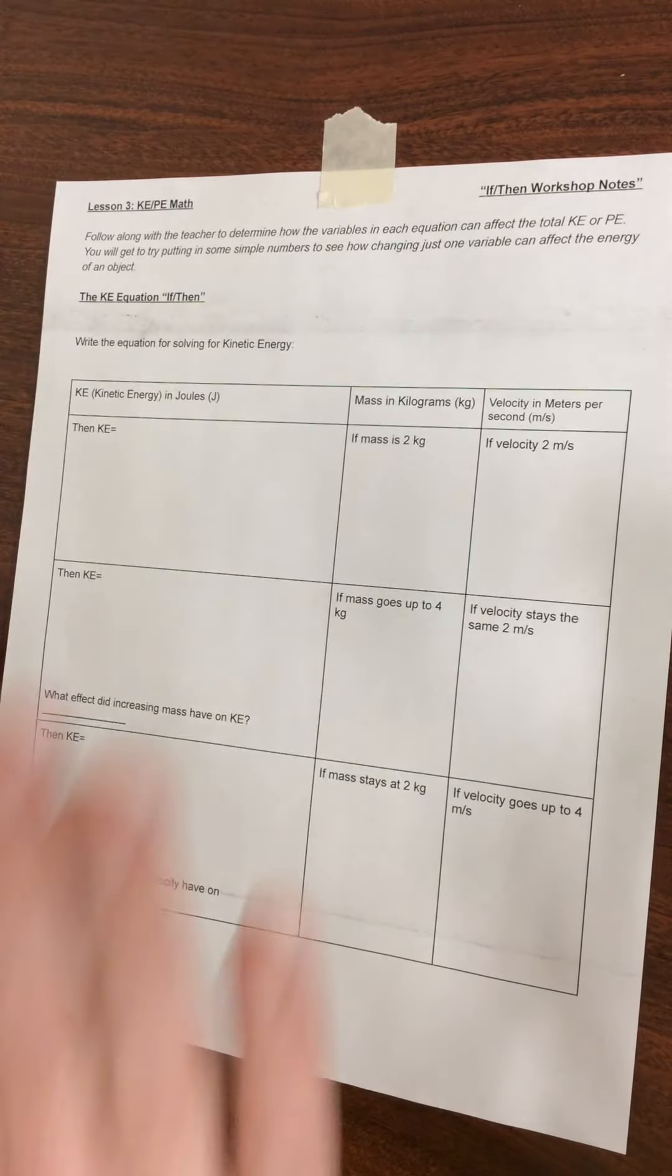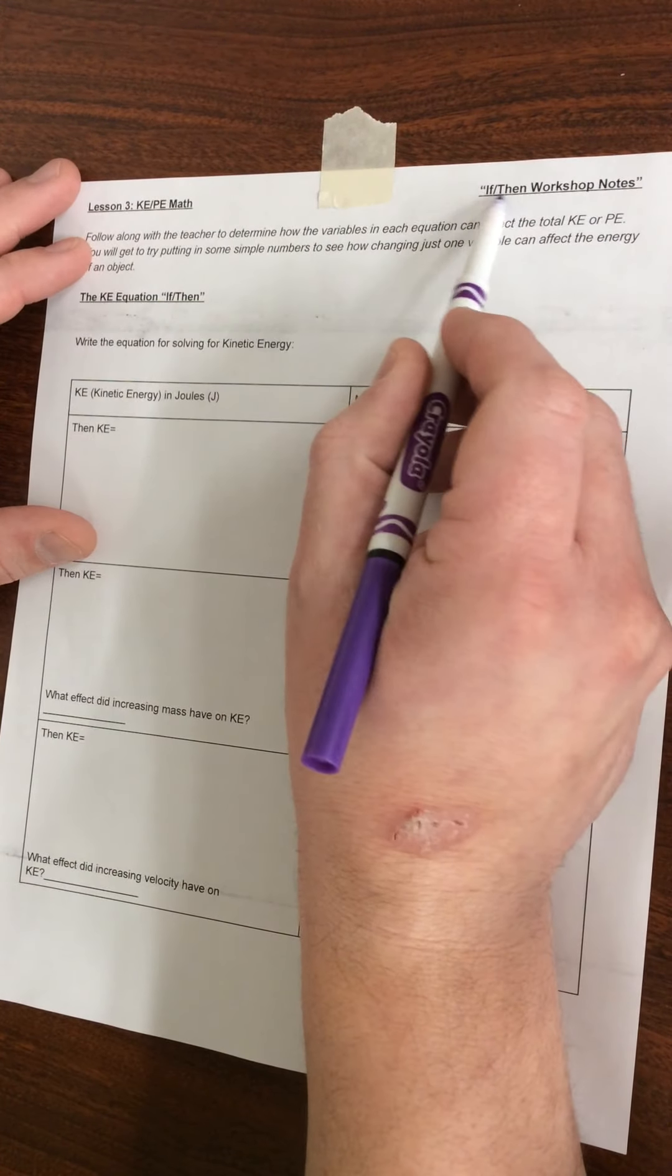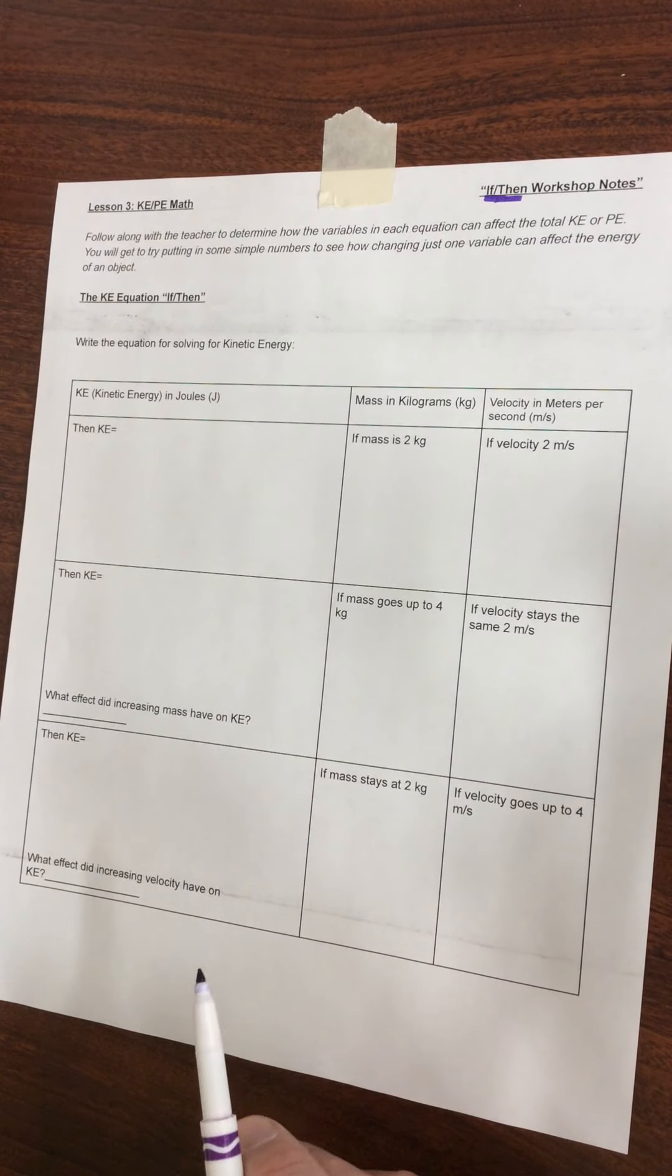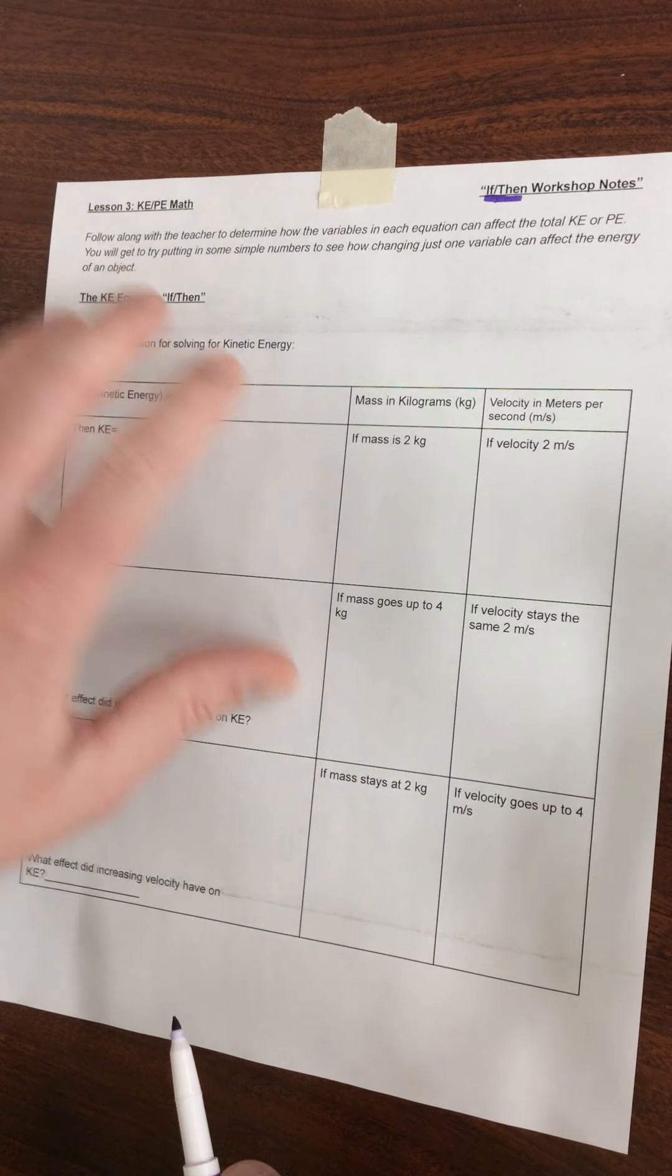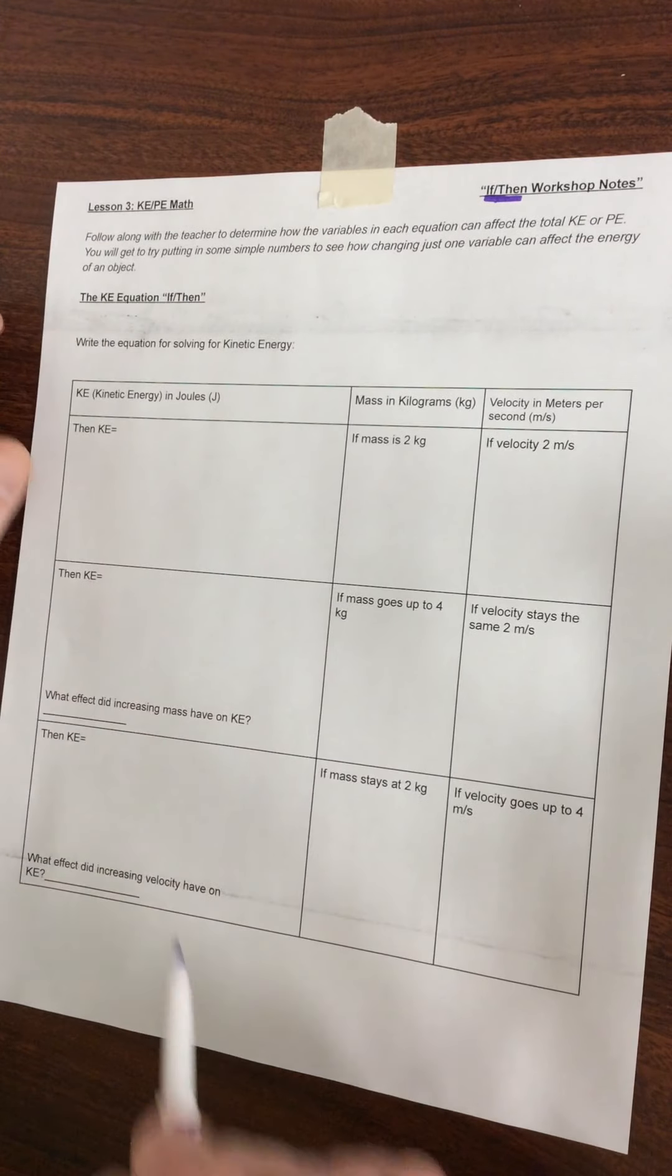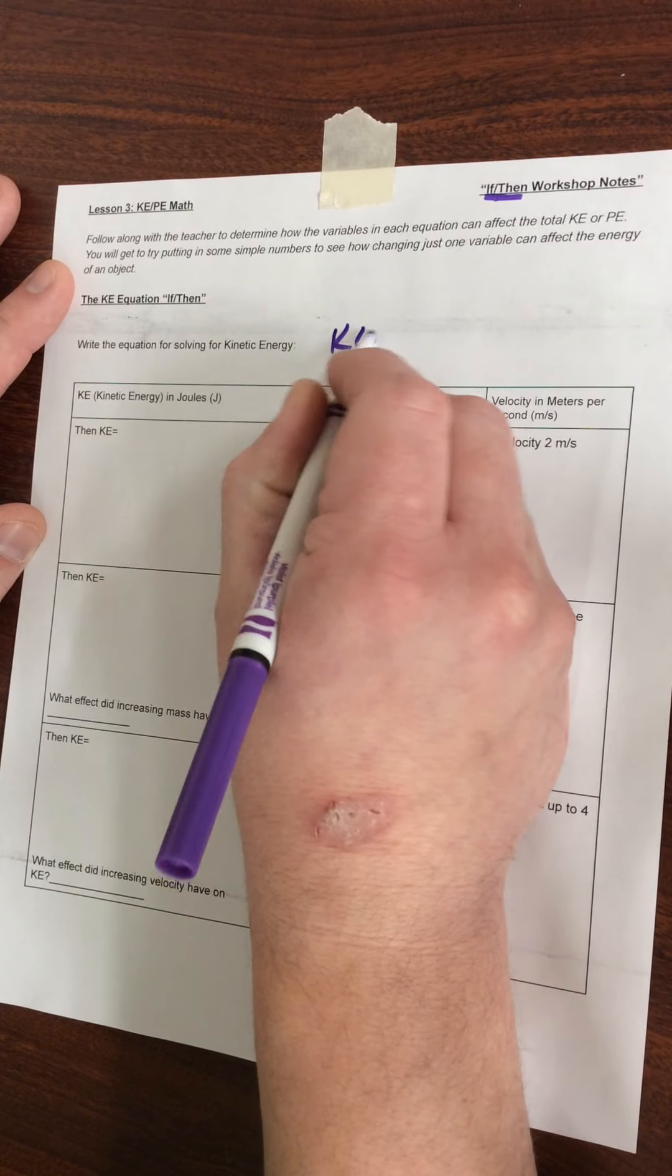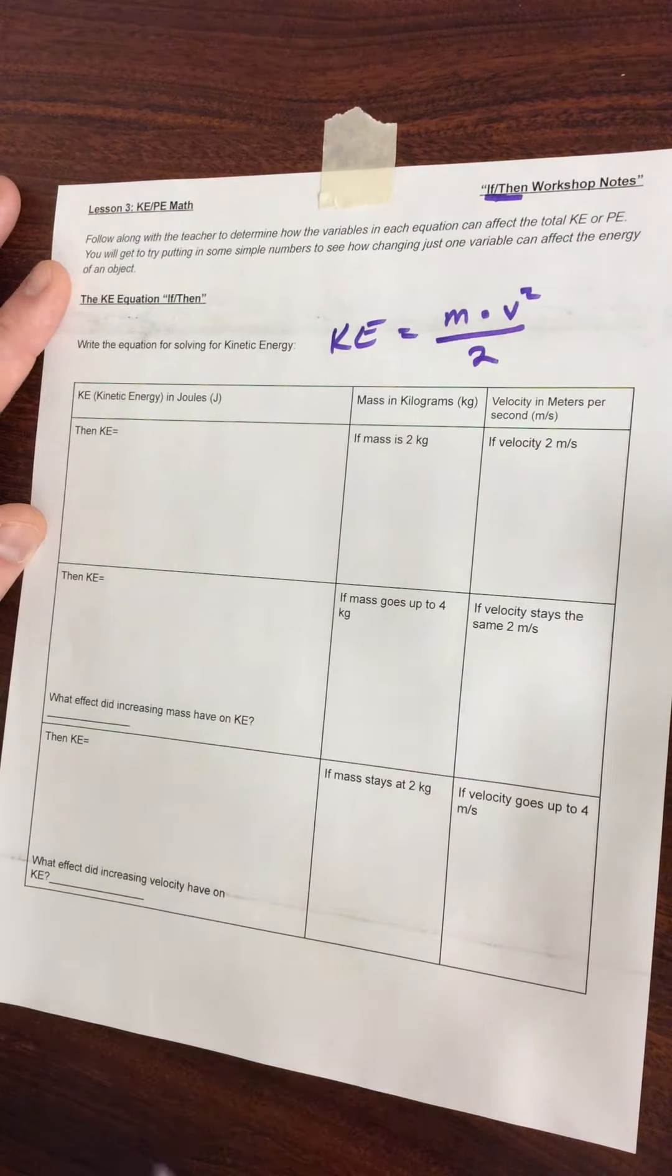So let's start out with kinetic energy. The title of this workshop is If-Then, because we're going to examine what happens to kinetic and potential energy when we change the variables - when we change the mass, the velocity, the height, the weight, and those types of things. The equation for kinetic energy is KE equals mass times velocity squared over 2.